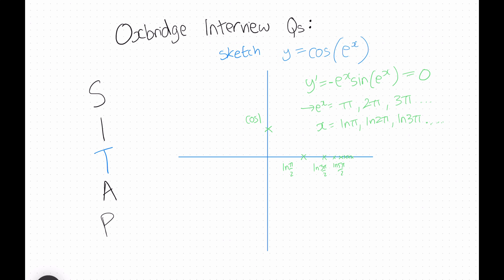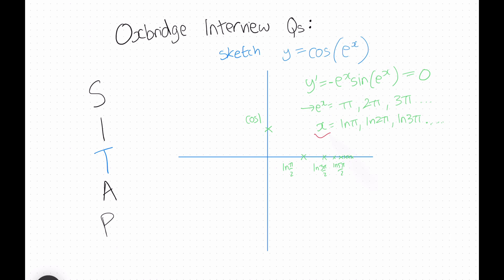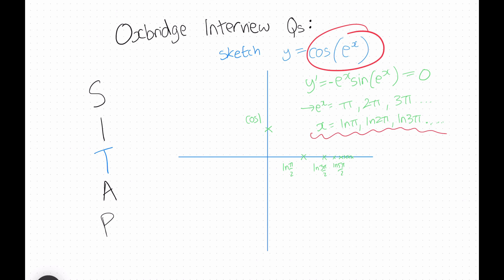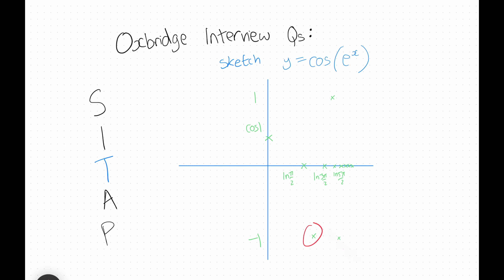Moving on to turning points, we differentiate and set that equal to 0, getting e^x equals pi, 2pi, 3pi, and so on, so x equals ln of those values. Plotting the ln graph shows these values also get squished. Since these represent minima and maxima of the cos function, they must be between 1 and minus 1, giving y values of minus 1, 1, minus 1, 1, and so on. We plot those points on the graph.